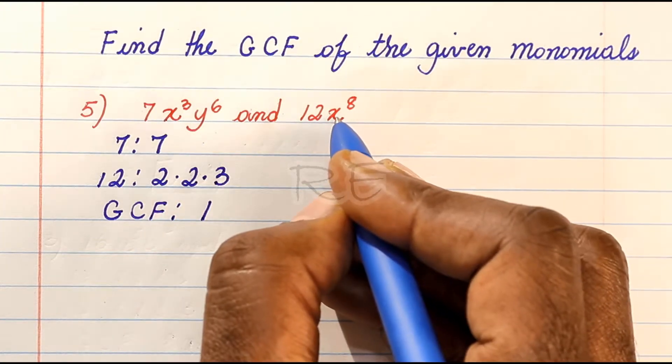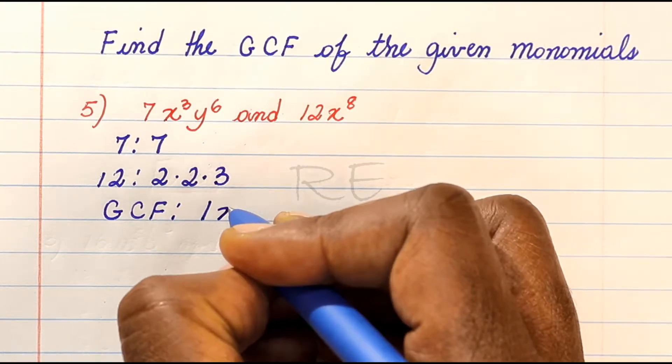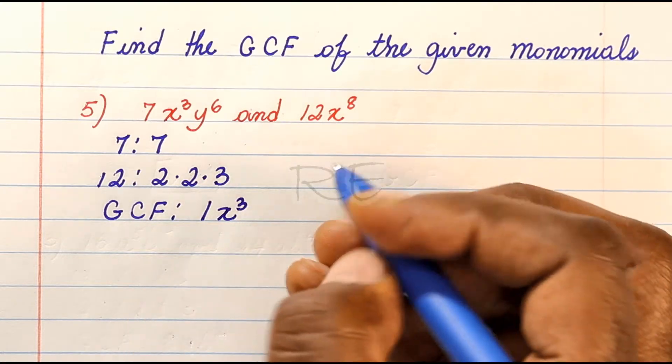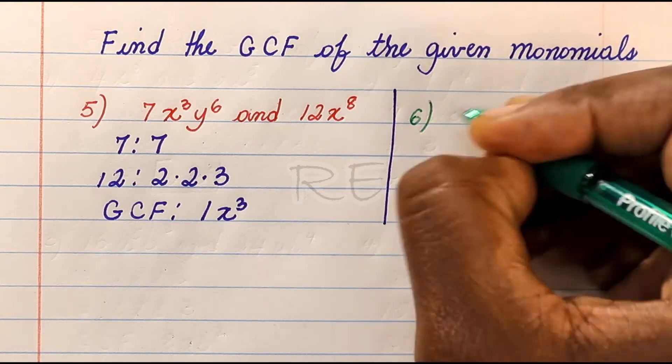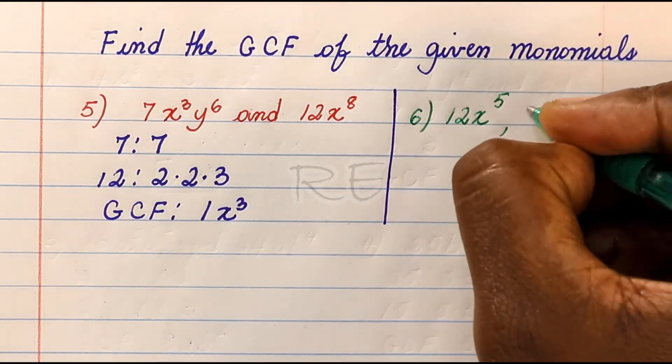X cubed, x to the eighth. X cubed is the lower number. And y to the sixth is by itself, so the GCF is x cubed.